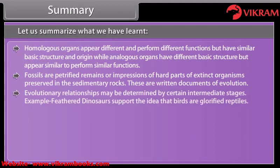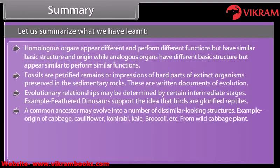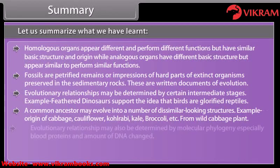Evolutionary relationships may be determined by certain intermediate stages — for example, feathered dinosaurs support the idea that birds are glorified reptiles. A common ancestor may evolve into a number of dissimilar-looking structures, such as the origin of cabbage, cauliflower, kohlrabi, kale, broccoli, etc. from the wild cabbage plant. Evolutionary relationships may also be determined by molecular phylogeny, especially blood proteins and amount of DNA change.